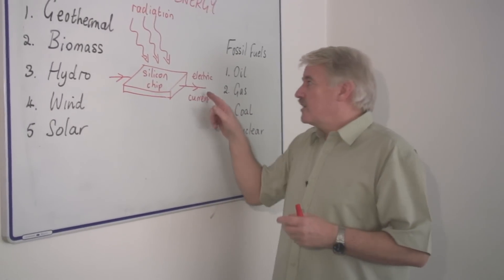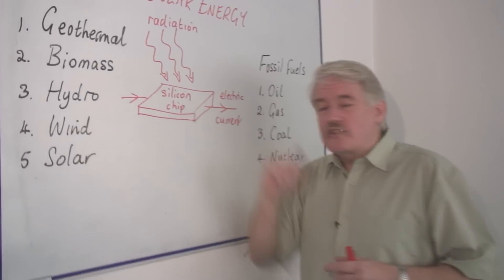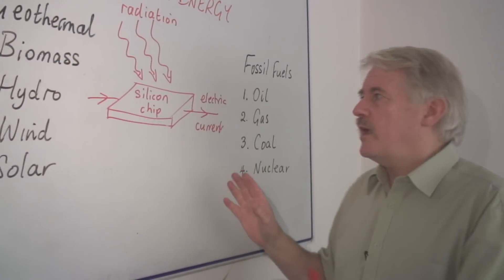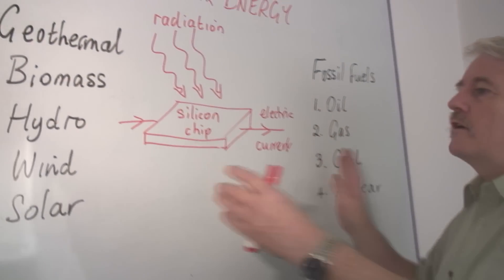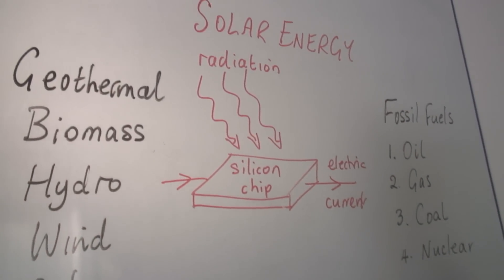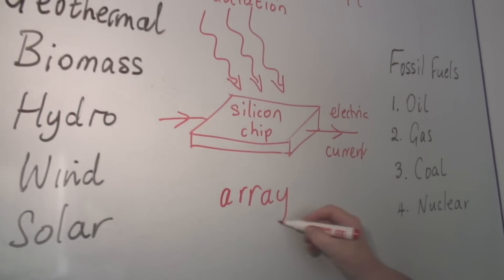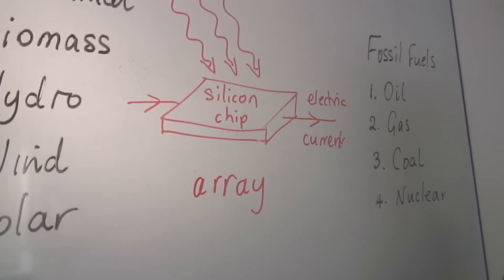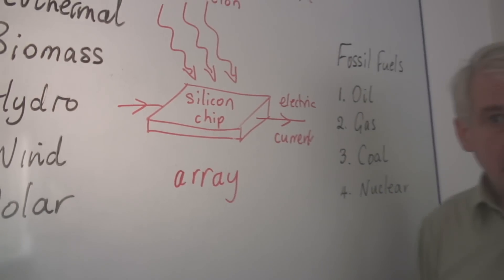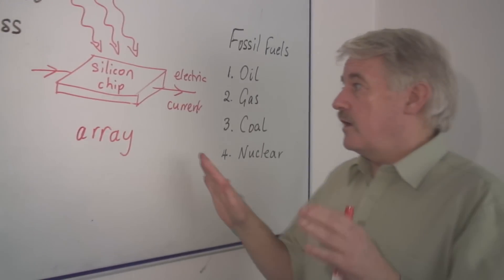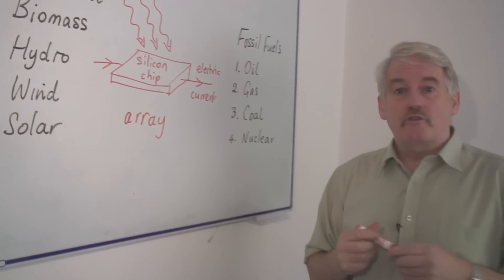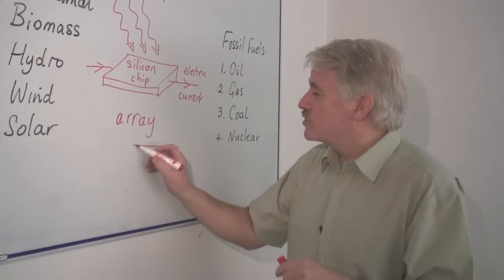Now the electric current to come out of one silicon chip is minute and therefore we have to put lots and lots of these silicon chips together. And we call that an array. And usually you will see arrays of silicon chips in these solar panels. You can see them, they're kind of a set of squares.